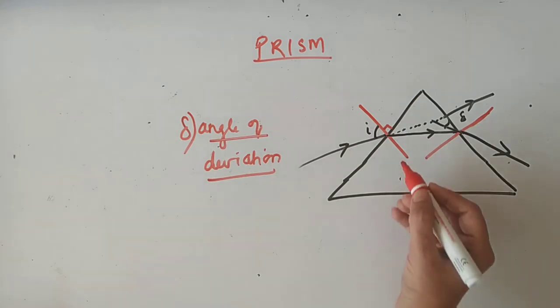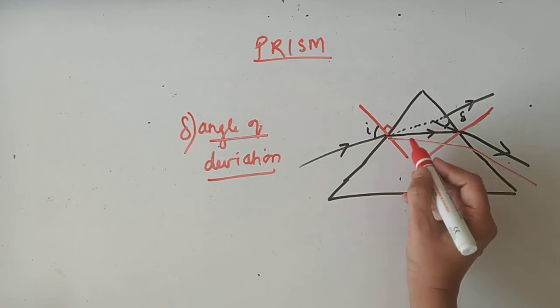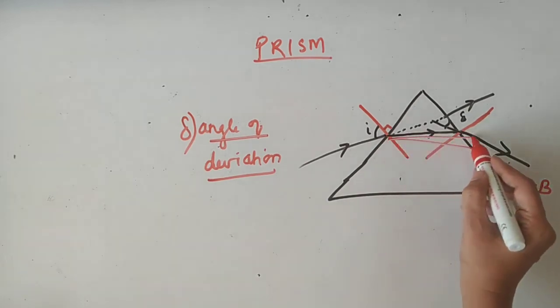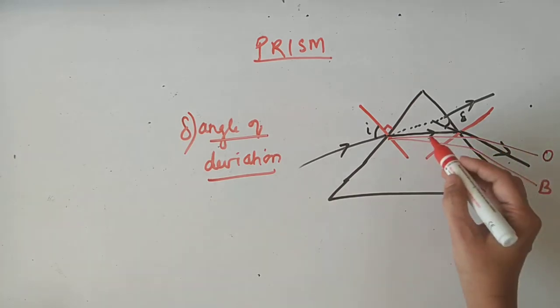So when the blue color is more bent, it will come from the lower side. So in this way we get the blue color of light, then we get the orange-red light.